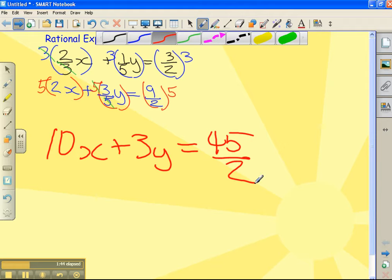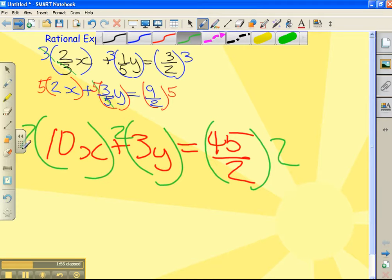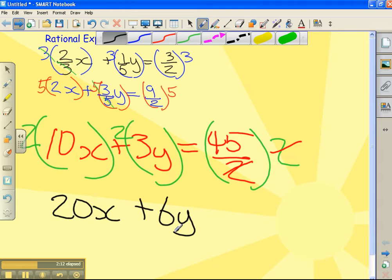So my last step is getting rid of my last denominator, which is 2. We times everything by 2. Those 2s cancel each other out. I now have 2 times 10 is 20x plus 6y equals 45.